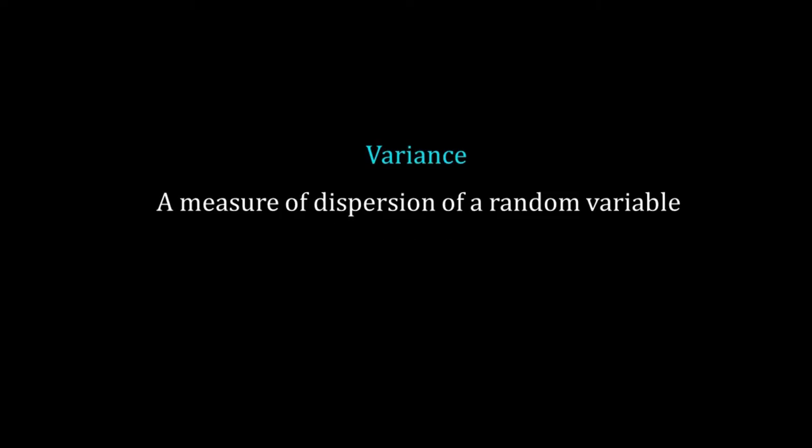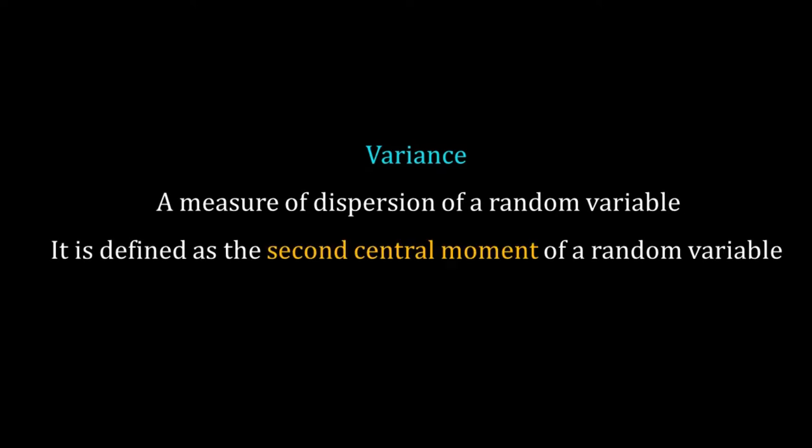In this video we will discuss variance and covariance. We start with the generalized definition of variance. Variance is a measure of dispersion of a random variable. In probability theory it is defined as the second central moment. I hope you know the basic concepts of moments.